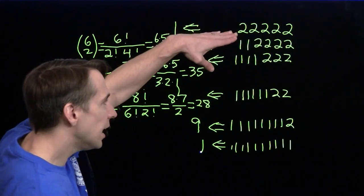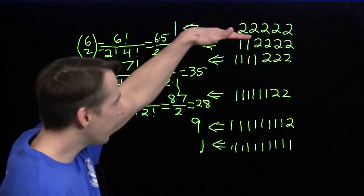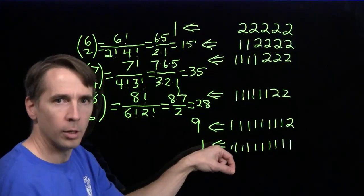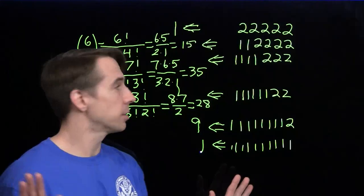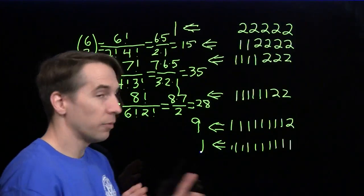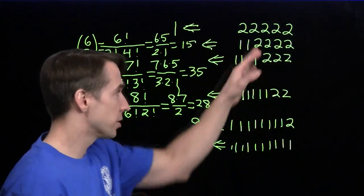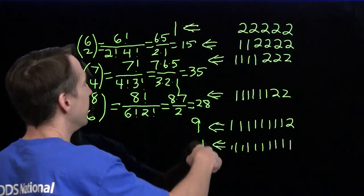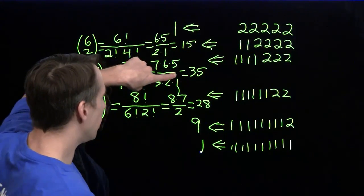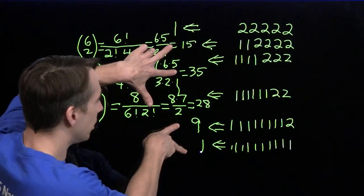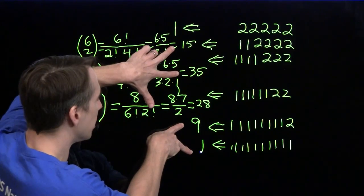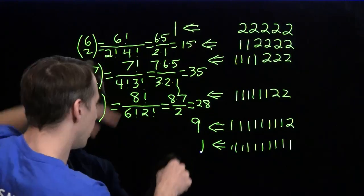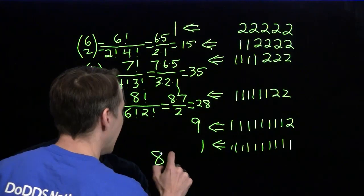We can see that our cases are very organized: five twos, then four, then three, then two, then one, then zero. So we know we've counted every single possibility once and only once because there are no overlaps. Now I just have to add these up. The 15 and the 35 gives me 50. The nine and the one gives me another 10 — that's 60. Then I add on the 29 from the other two cases. We have a total of 89.